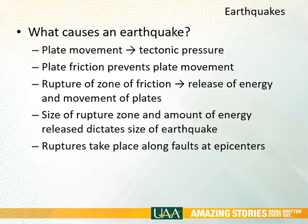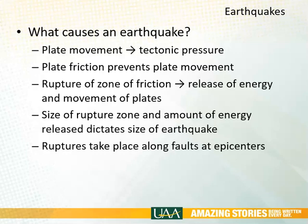Thrusting, faulting, and all these tectonic activities cause not only mountains and deformation, but also earthquakes. Plates are moving and build up tectonic pressure. The plates have friction as they push against one another because they're solid rock and don't move easily. Eventually the tectonic energy overcomes the zone of friction and an area ruptures and releases energy — that's what causes an earthquake. The size of the rupture zone and the amount of energy released directly relates to how strong the earthquake is. These ruptures take place along faults at what are called epicenters.